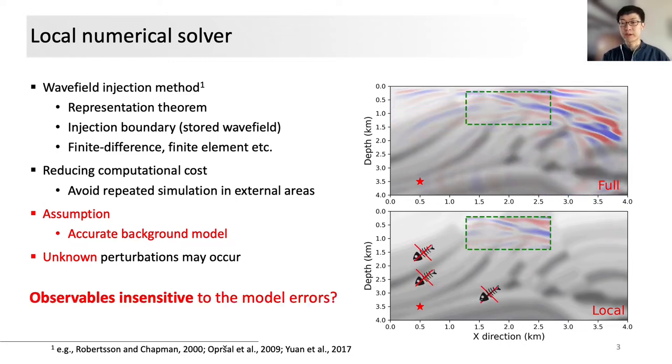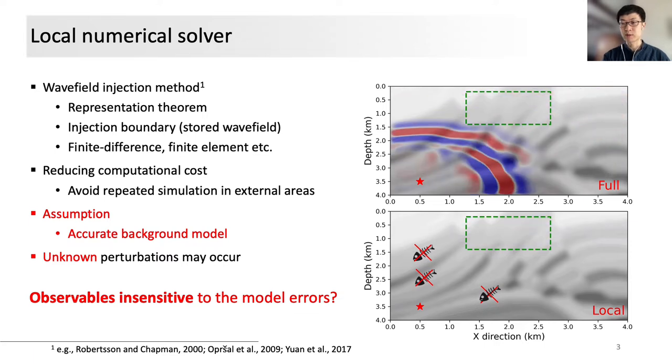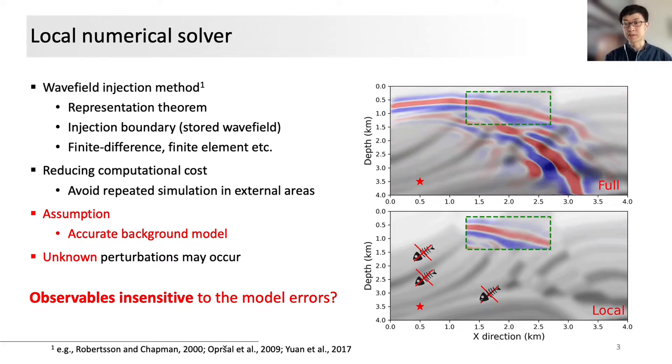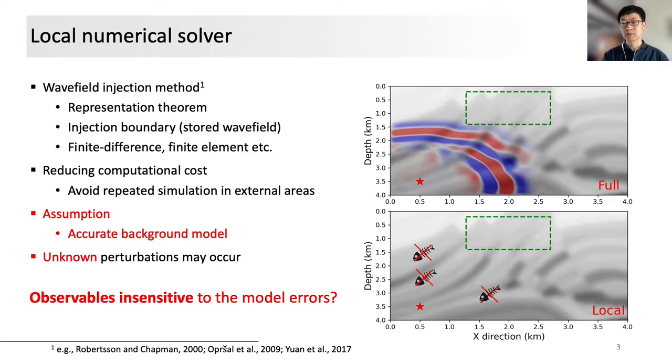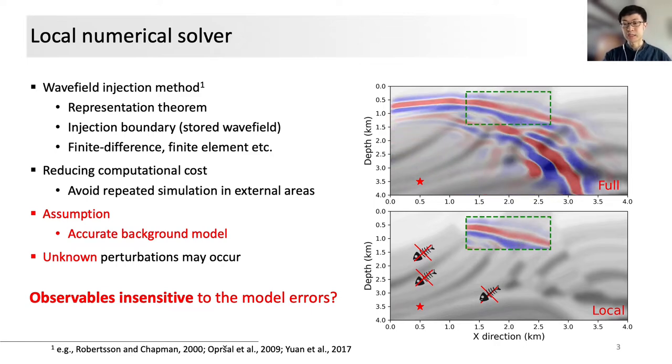However, if there are some observables that are kind of short-sighted, in other words, their sensitivities are only limited to the target areas, that will make the local solvers more robust and the localized inversion scheme both efficient and accurate.